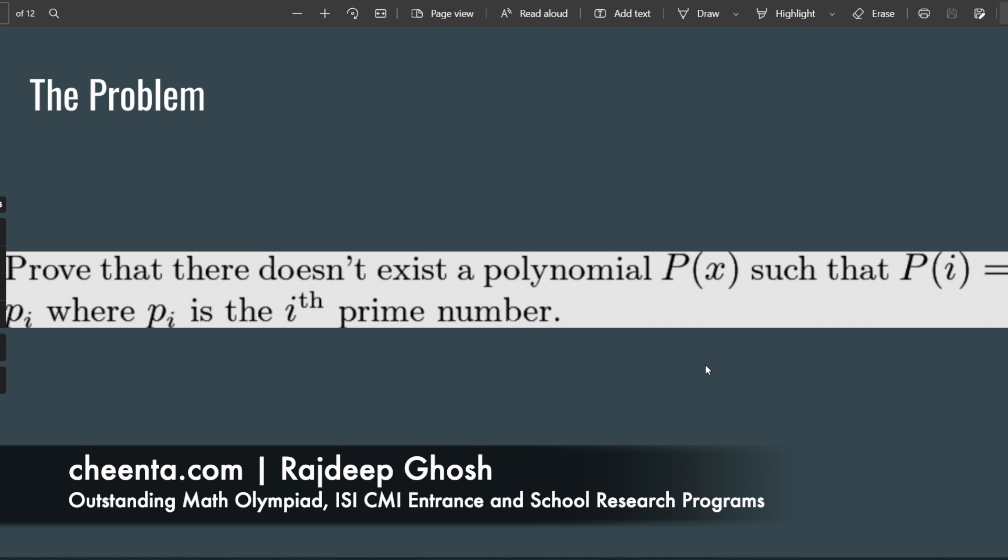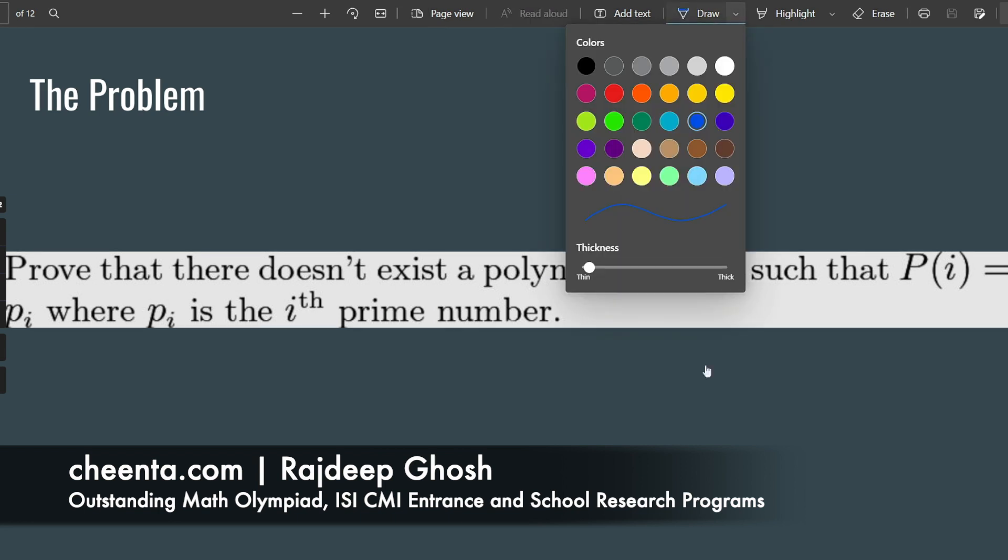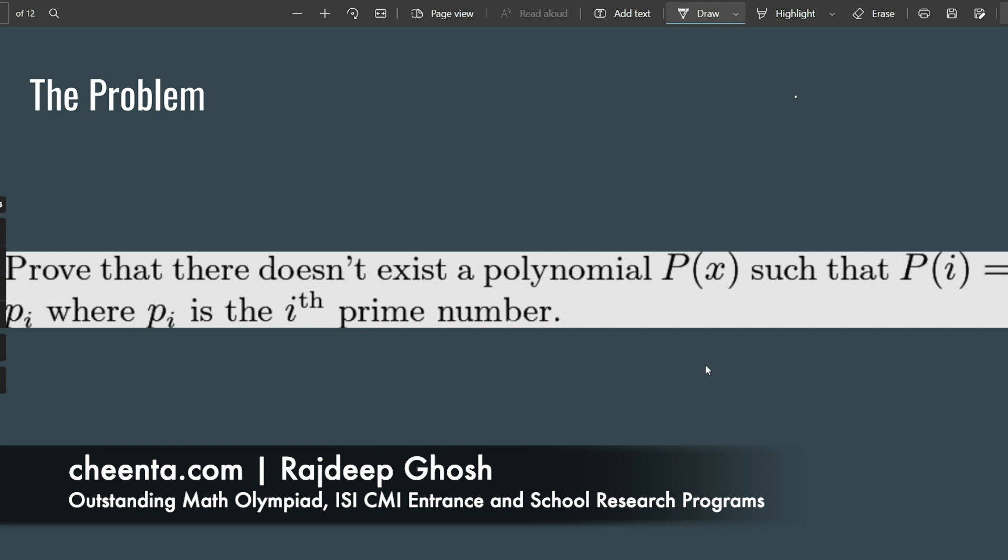The problem: we want to show that there does not exist a polynomial P(x) with real coefficients, so that P(i) is equal to P_i, where P_i is the ith prime number. Note what this means: you cannot find a polynomial formula for the prime numbers. There does not exist some nice function F(x) which is a polynomial such that F(1) is the first prime number 2, F(2) is the second prime number 3, and so on.